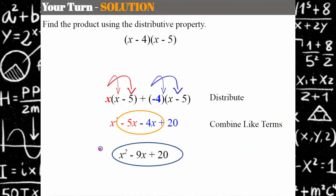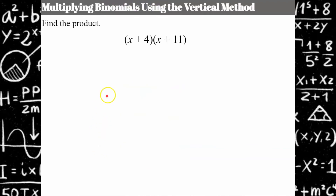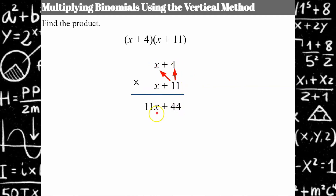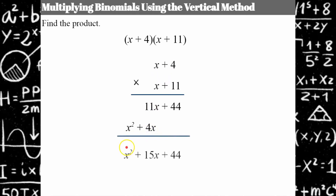Now let's try the distributive property in a vertical fashion — this is how you learned to multiply back in second grade. You stack it: put x plus 4 over x plus 11. Just like standard multiplication: 11 times 4 gives 44, 11 times x gives 11x. Then change and do the next term: x times 4 and x times x. You always used to move over a digit — we do the same thing here, so like terms are stacked. Combining: x squared, then 11x plus 4x is 15x, plus 44. Product in standard form.